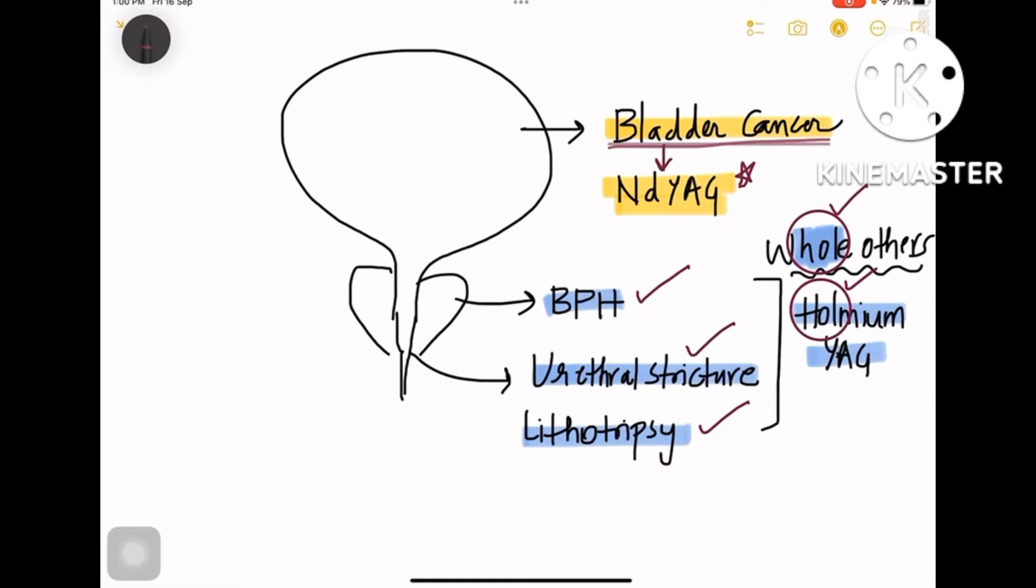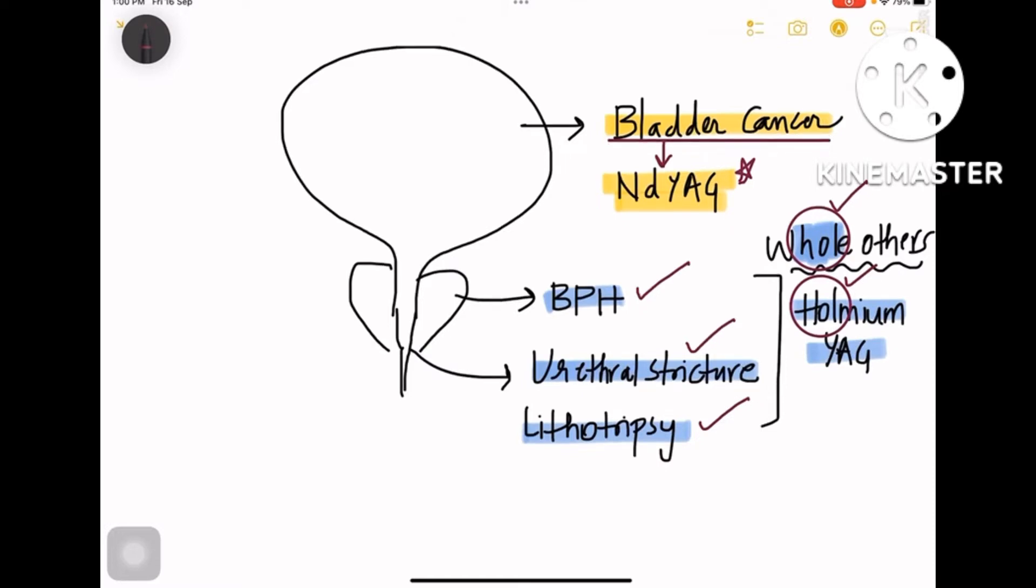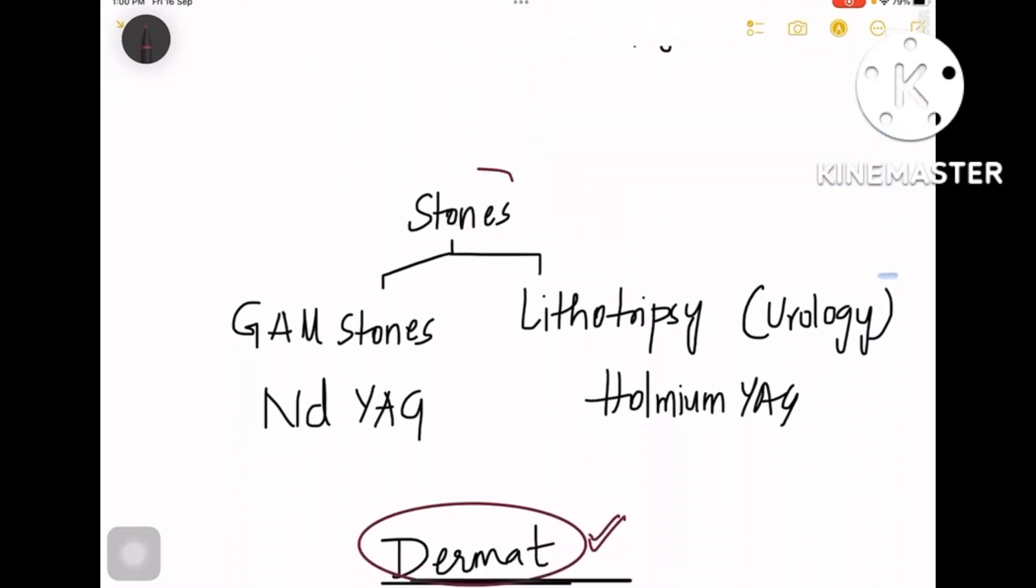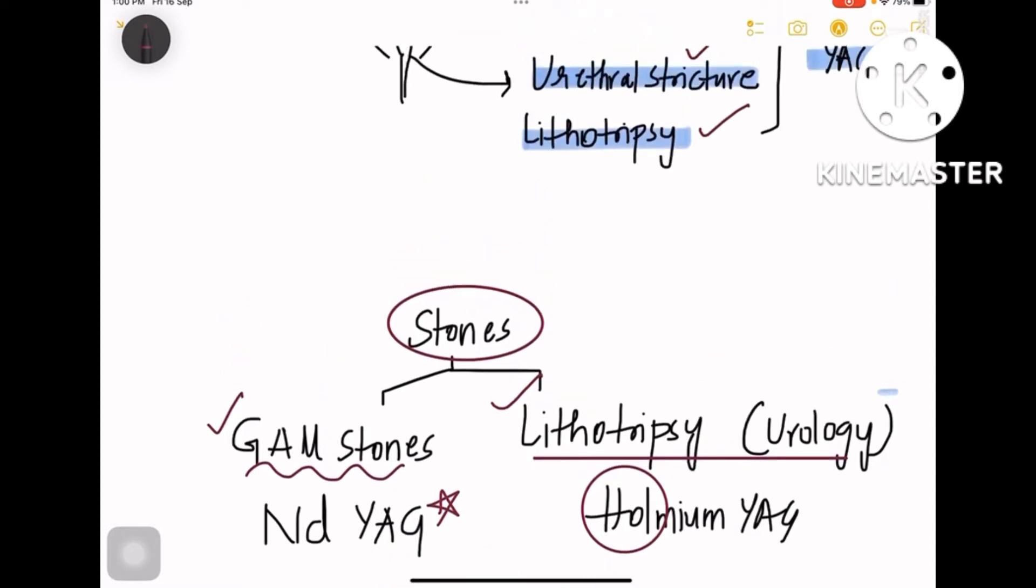When we discuss stones, there are two kinds of stones: one is gallstone and the other is lithotripsy, that is urology kidney stones, renal stones. So for lithotripsy as already discussed, Holmium:YAG is the laser used—whole others, Holmium:YAG lithotripsy—whereas for gallstones the most common one used is Nd:YAG laser. This completes the dermat, stones, and bladder surgery.